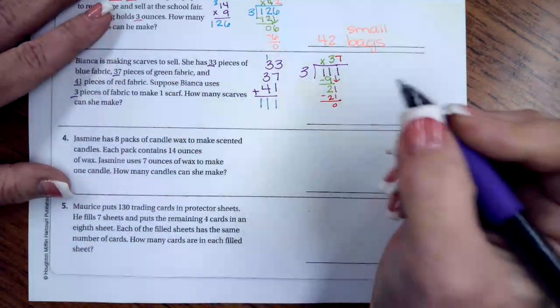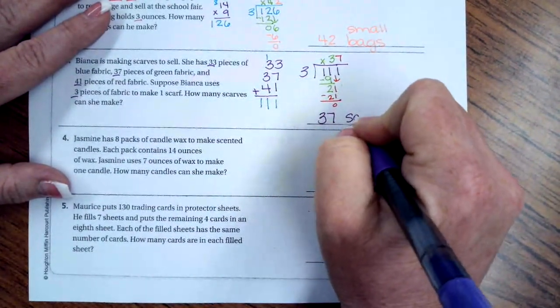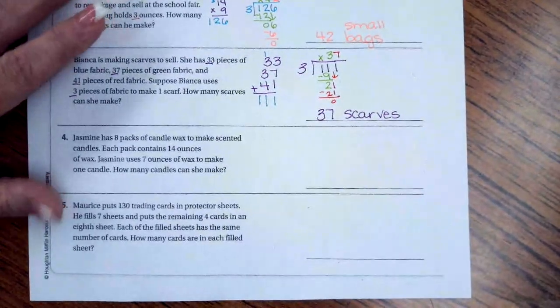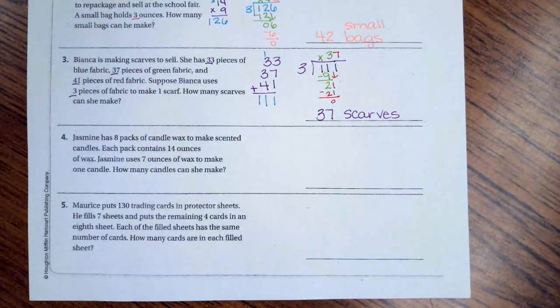So our answer is going to be 37 scarves. All two part problems. First, you got to know how much you have all together. Then we've got to divide it.